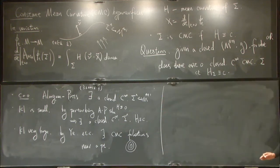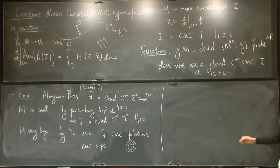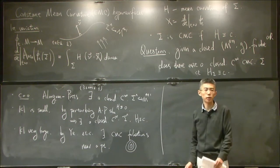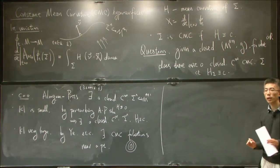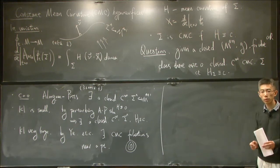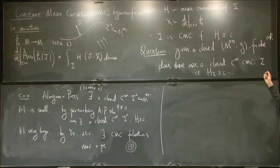So these results partially solve this question, but there's still a gap between the small c and large c. And there are also many other constructions for closed CMC hypersurfaces, but mainly not in the prescribing mean curvature point of view. So I'll just stay up to here.